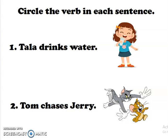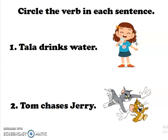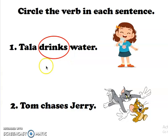Now for our last exercise: circle the verb in each sentence. Number one — Tala drinks water. What is the action that Tala is doing? She is drinking. So the verb here is drinks. We circle drinks.